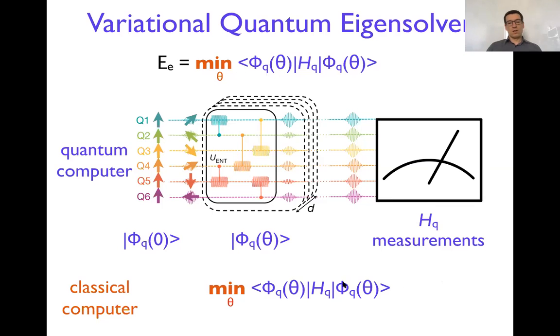And this cycle repeats and eventually the idea is that the classical computer, classical part of the algorithm will converge to some value that will be the lowest and that's the end of the algorithm. That's the expectation value of Hamiltonian, which is corresponding to ground state say.